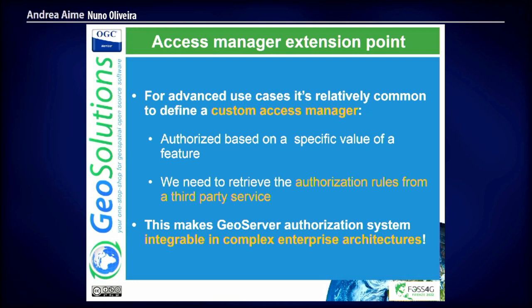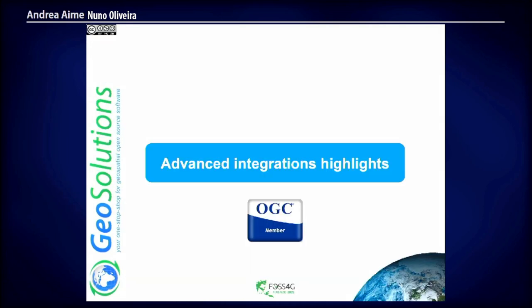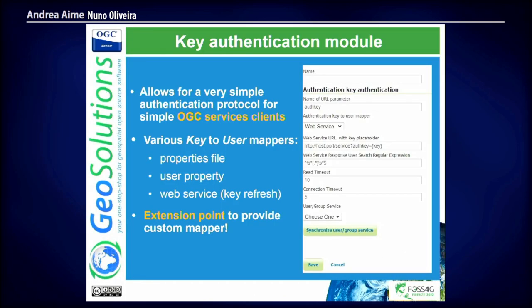Now I'll go over some advanced integrations. The first is the key authentication module — not the most powerful, but a very useful one. It's typically used when integrating with older systems or clients that don't have the ability to send an HTTP basic token or user name — where the authentication is provided as a key. The client provides the key, GeoServer uses that key to authenticate the user, and then performs authorization. We have extension points where the authorization key can be stored in web services to improve security — it can be refreshed, and so on.